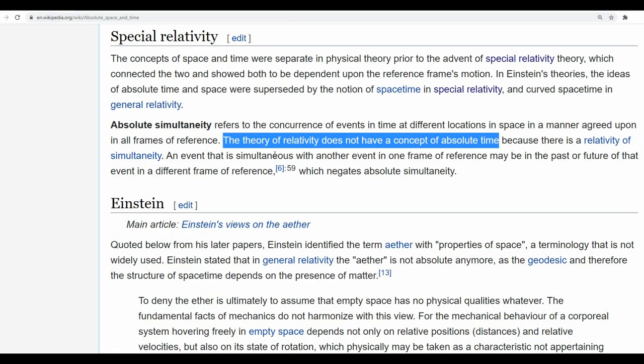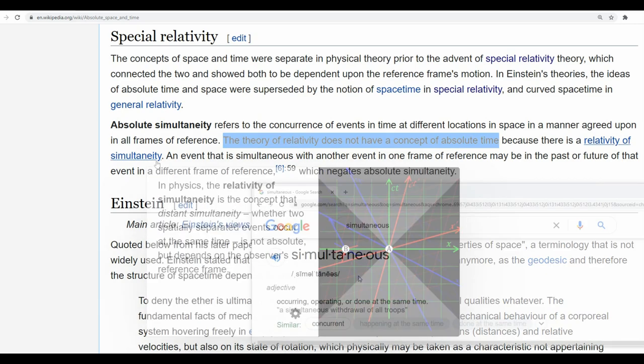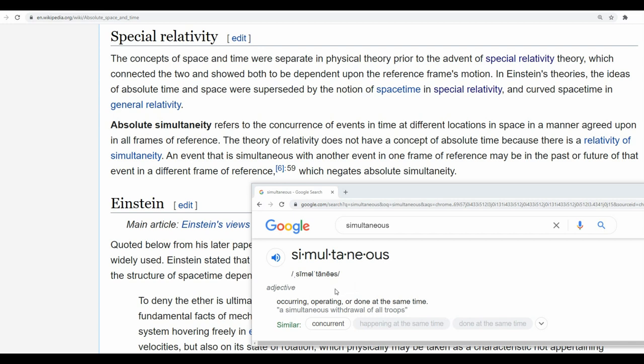So Einstein's theory of relativity does not have a concept of absolute time because there is a relativity of simultaneity. So what does that mean? Two events are simultaneous when they happen at the same time.